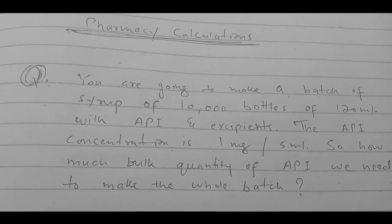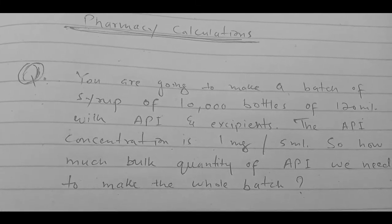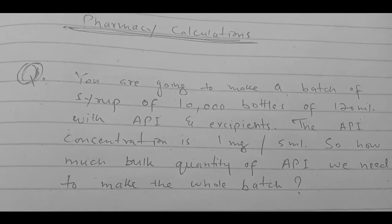and excipients. The API concentration is 1 milligram per 5ml. So how much bulk quantity of API we need to make the whole batch?